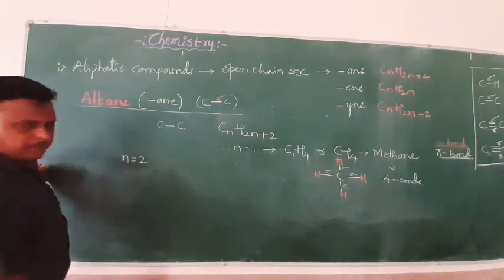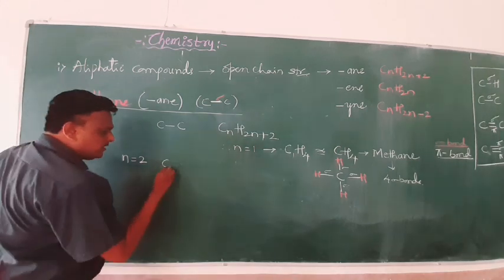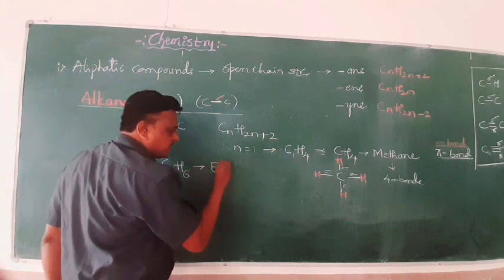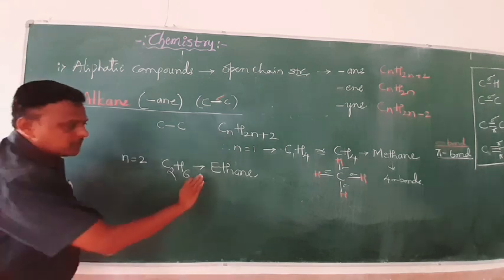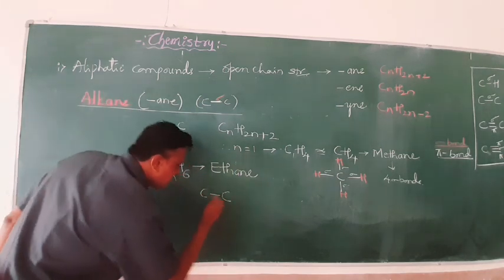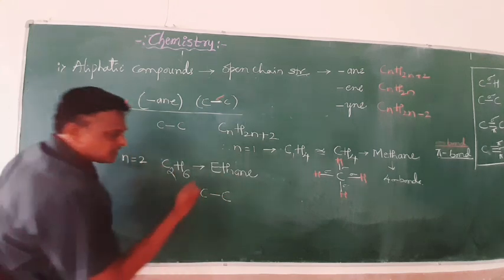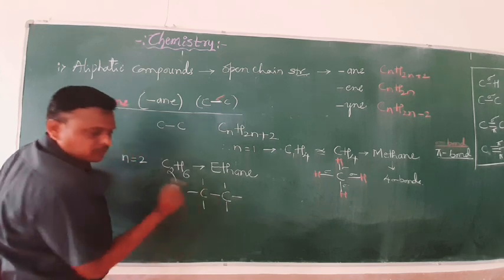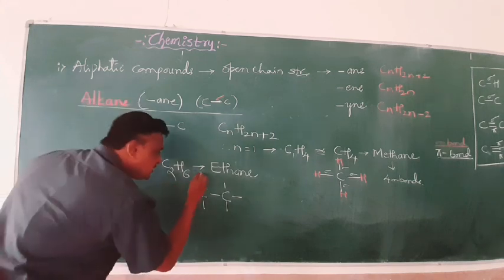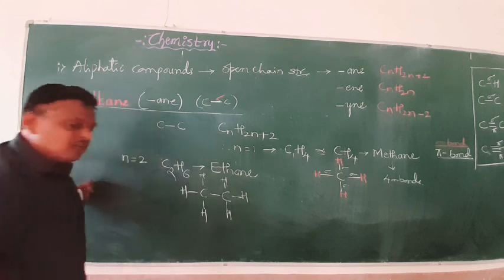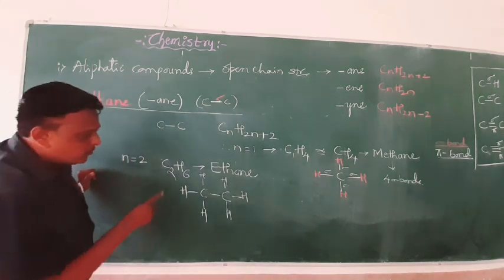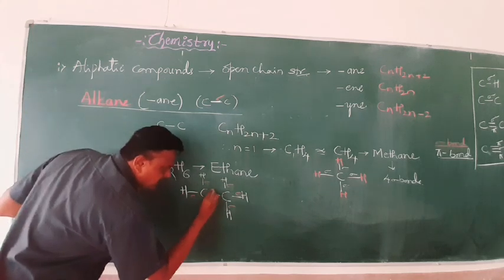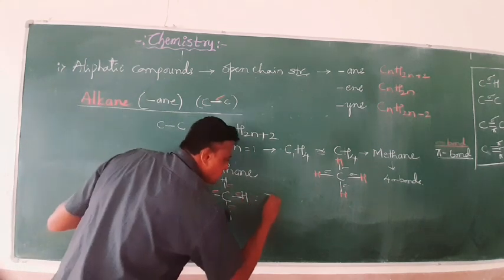For N equals 2, the formula becomes C₂H₂×₂₊₂ = C₂H₆. Two carbon atoms — this is ethane. The structure has a carbon-carbon single bond with three hydrogens on each carbon, totalling 6 hydrogen atoms. Counting sigma bonds: six C-H bonds (each sigma) plus one C-C bond (also sigma) gives 7 sigma bonds in ethane.